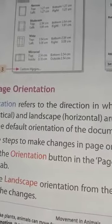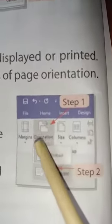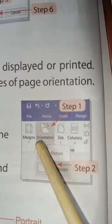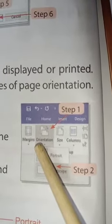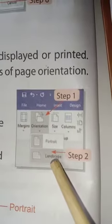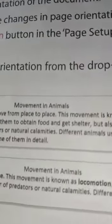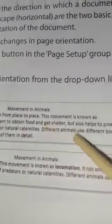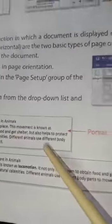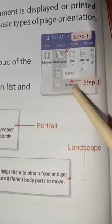Follow the steps to make changes in the page orientation. Click on the Orientation button in the Page Setup group of the Layout tab. Select the Landscape option from the drop-down list and observe the changes. Previously the text was in portrait form.